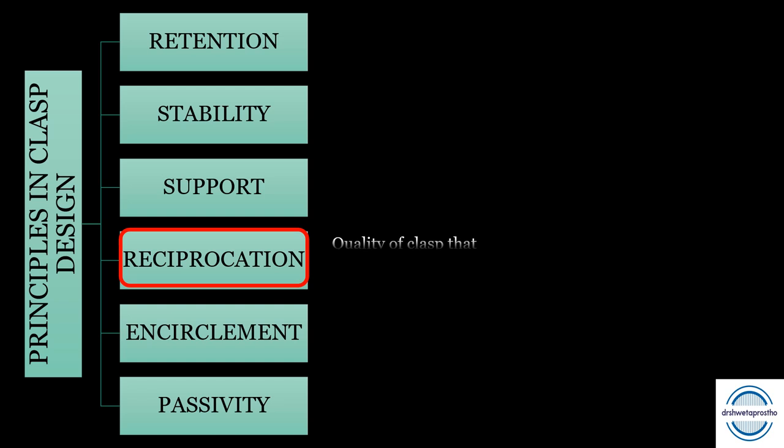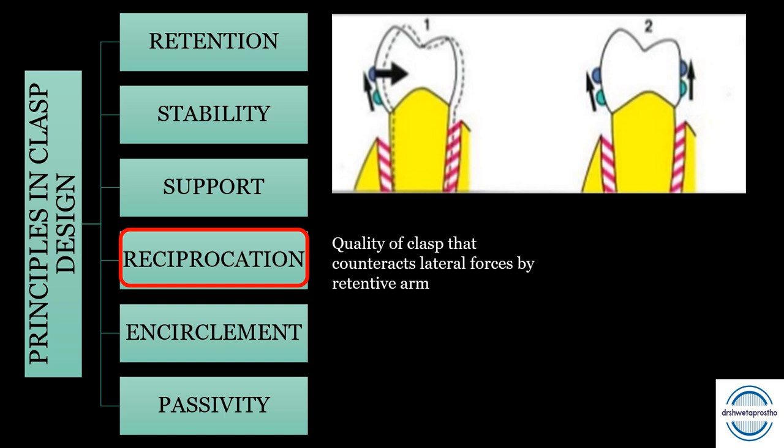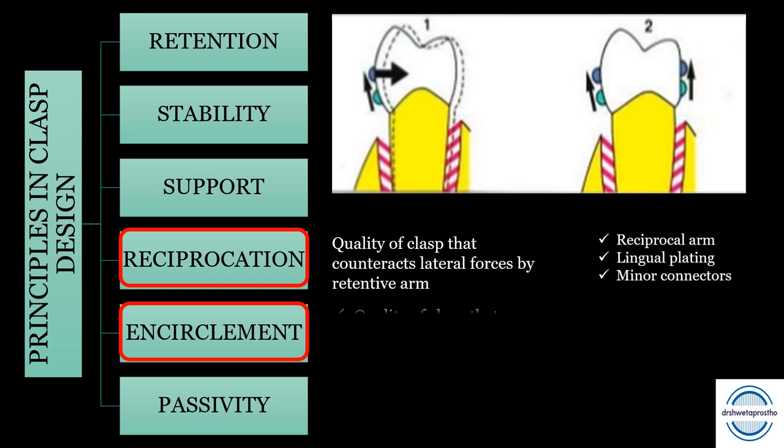Reciprocation is the quality of the clasp that counteracts the lateral forces created by the retentive arm. As the retentive arm passes over the height of contour, it flexes and creates lateral forces that can damage the abutment. To counteract these, we give reciprocal elements: the reciprocal arm, lingual plating, and the minor connector — this is another MCQ. Encirclement is the quality of the clasp that braces the abutment; it should be more than 180 degrees.